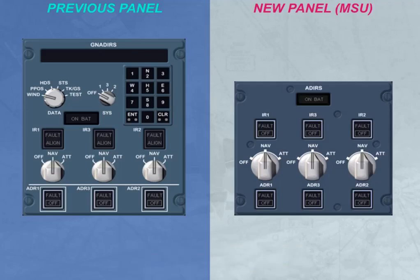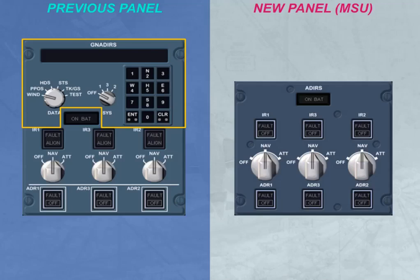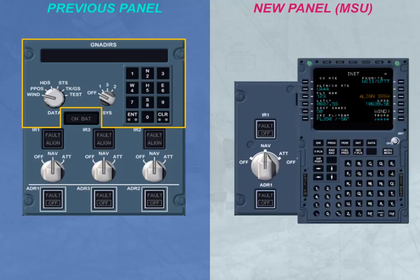The most visible difference between these panels is the deletion of the keyboard and related display from the MSU. This means that when using the MSU, IR system final alignment is only possible via the MCDU position insertion.